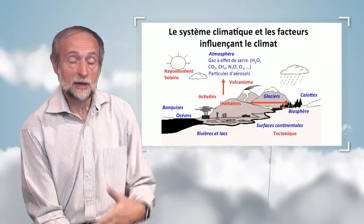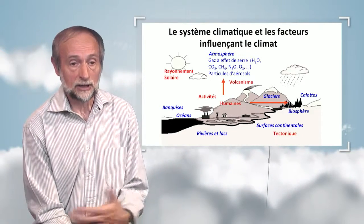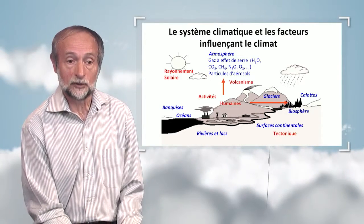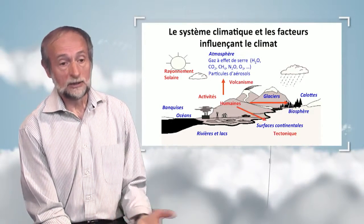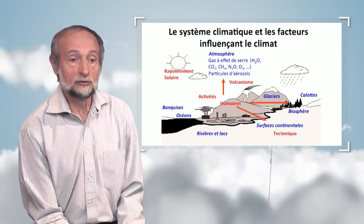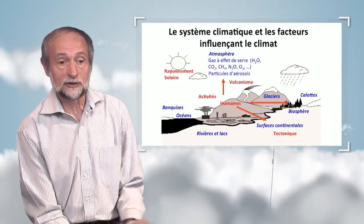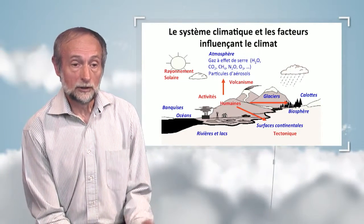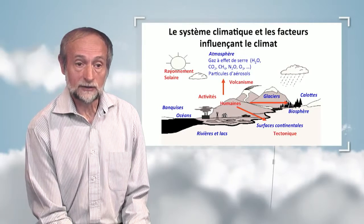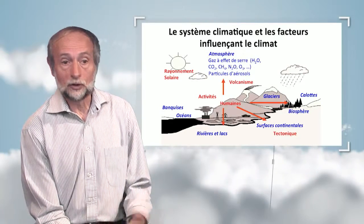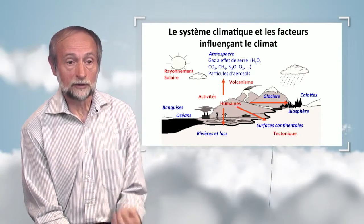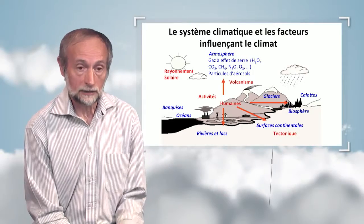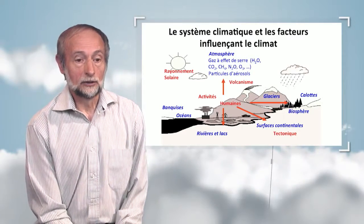Local climate changes occur due to the fact that deforestation will decrease humidity. Finally, human activities have an impact on continental surfaces by changing land use with irrigation, or by changing rivers and lakes, with a local impact.